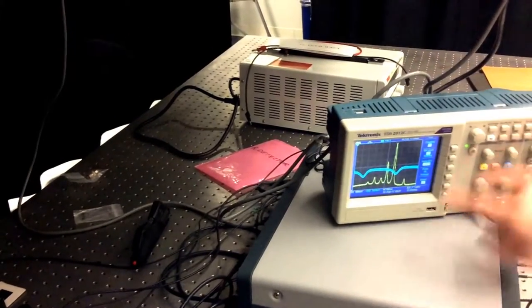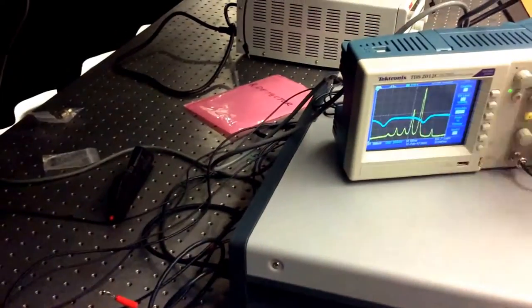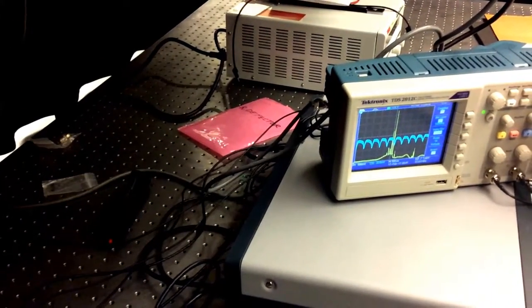And so what I can do is I can turn on this channel 2 right here, which is coming from the other photo detector at the end of the Fabry-Perot cavity. And I have these peaks here. And if I zoom out, you can see that they occur regularly.